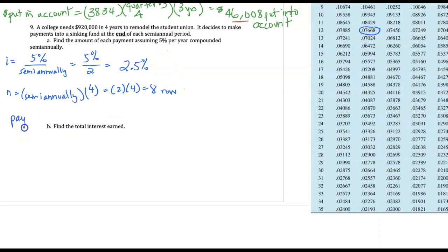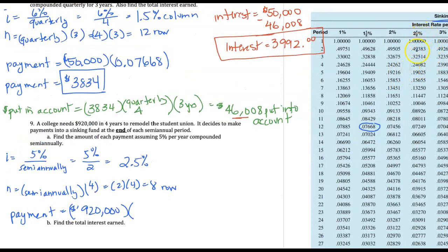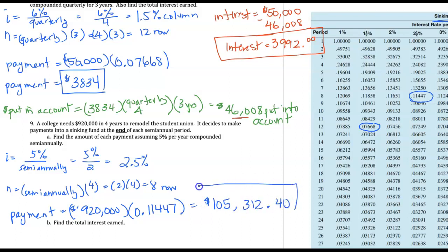To find our payment, we're going to take that future goal of nine hundred twenty thousand dollars and multiply it by the number we get in the table for the two and a half percent column and row eight. Finding that value, we take the decimal 0.11447 back to our calculation. Multiplying together, we get a payment of one hundred five thousand three hundred twelve dollars and forty cents — and these are the semi-annual payments.